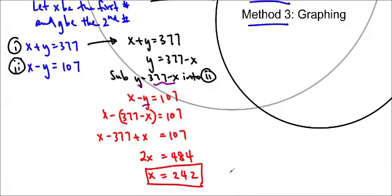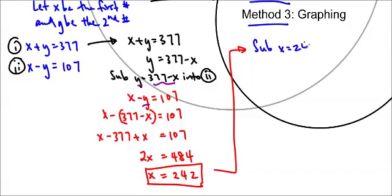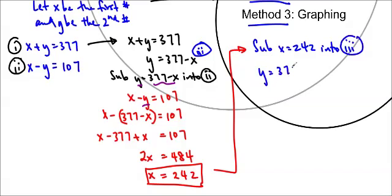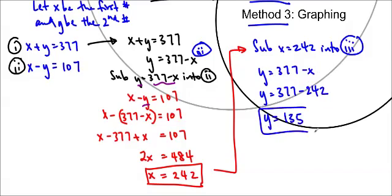Now I have my first variable, so I need to find the second. I'll substitute x equals 242 back. Rewriting: y equals 377 minus x. You have to rewrite it so everyone knows what's going on — don't skip steps, proper form is required. So y equals 377 minus 242, which gives y equals 135.